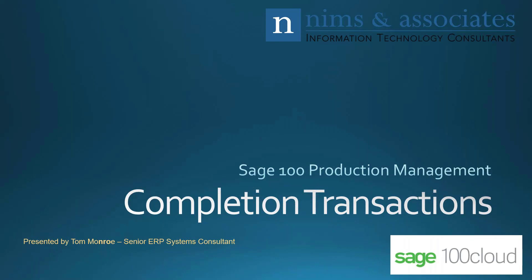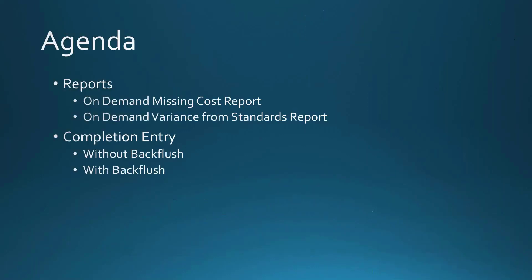Thank you very much for joining us today in our continuing series on Sage 100 Production Management. Today we're going to talk about completion transactions. Before we talk about completion entry, we're going to look at two important reports: the on-demand missing cost report and the on-demand variance from standards report. After looking at these reports, we'll do some completion entries — a couple without backflush processing and one with backflush processing.